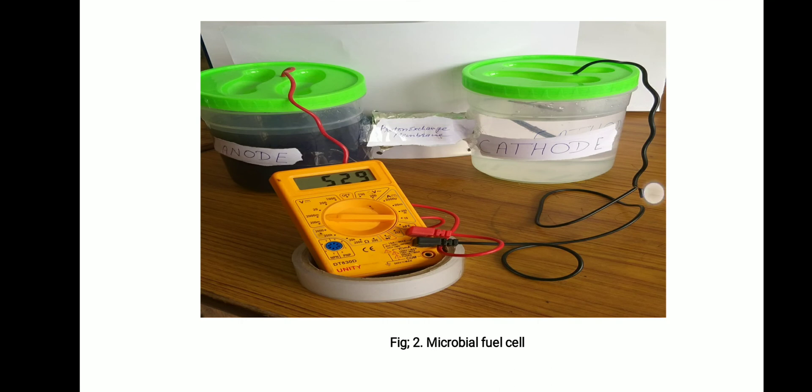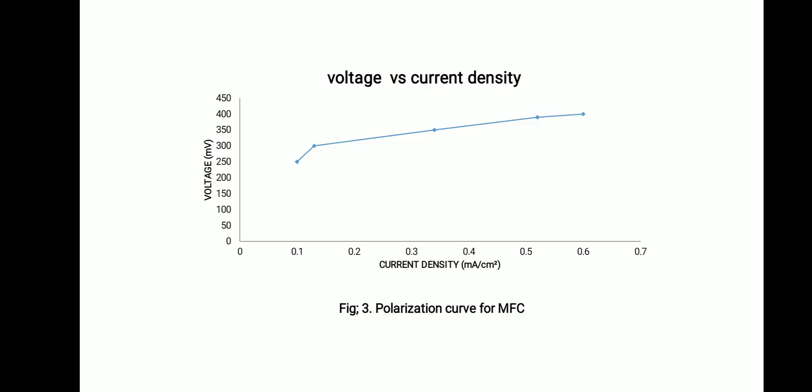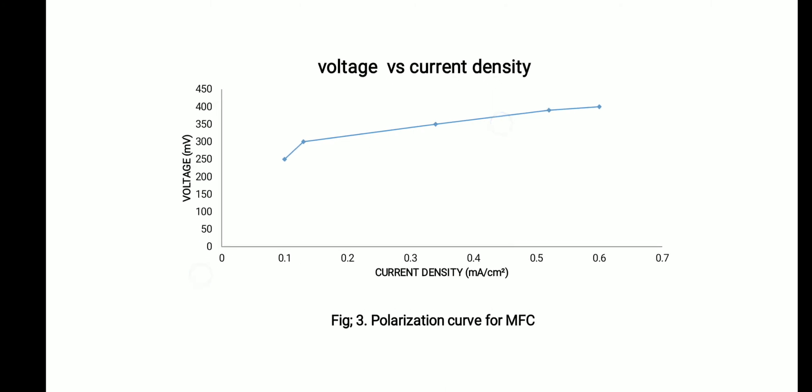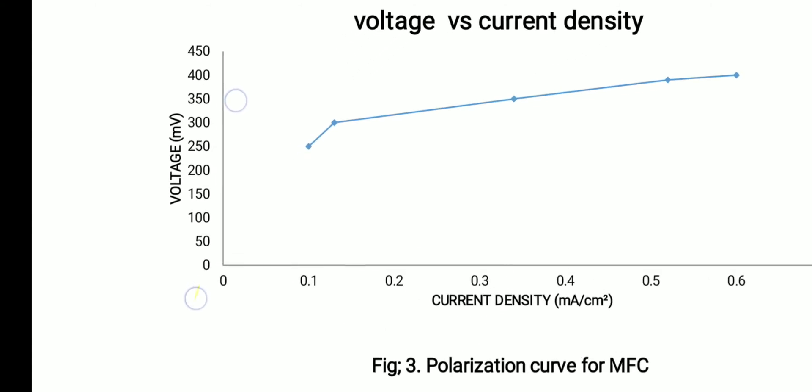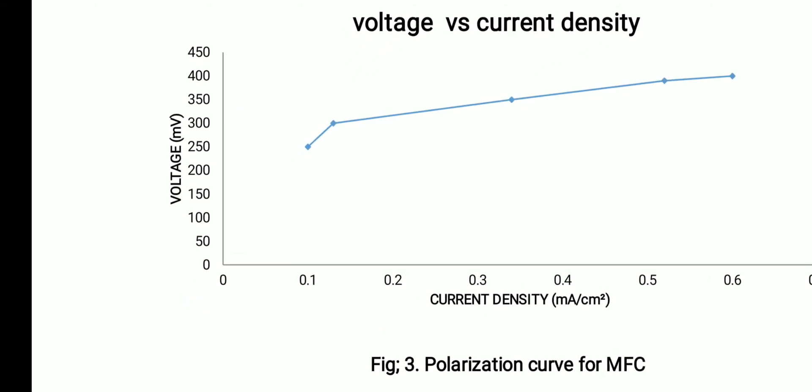This is the result shown as a small graph. It is a polarization curve for MFC, showing voltage versus current density on the y-axis and x-axis respectively.